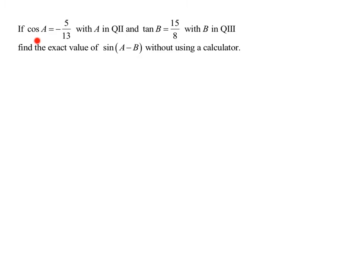In this problem I know the cosine of A and I know A is in quadrant 2, I know the tangent of B with B in quadrant 3, and I need to find the exact value of the sine of A minus B without using a calculator.